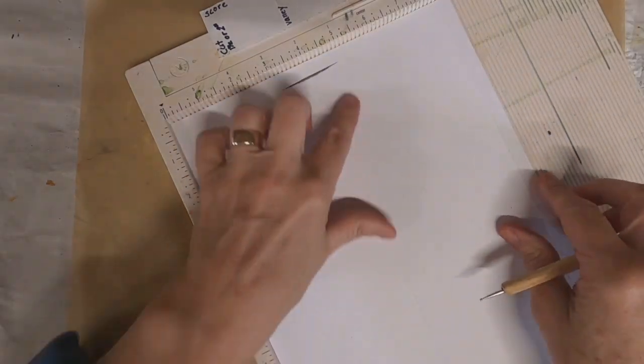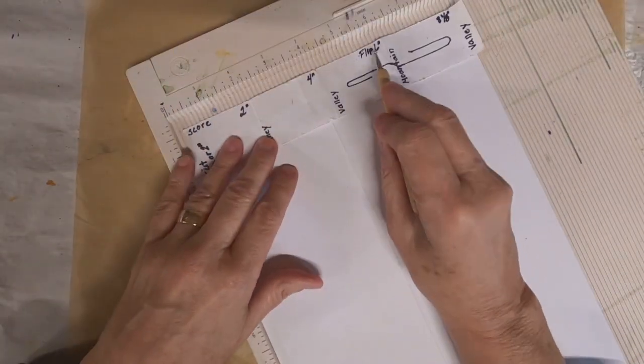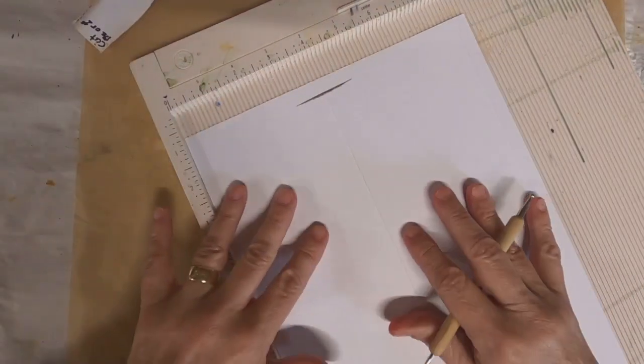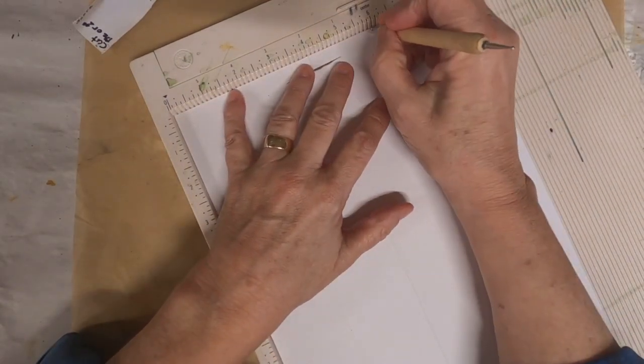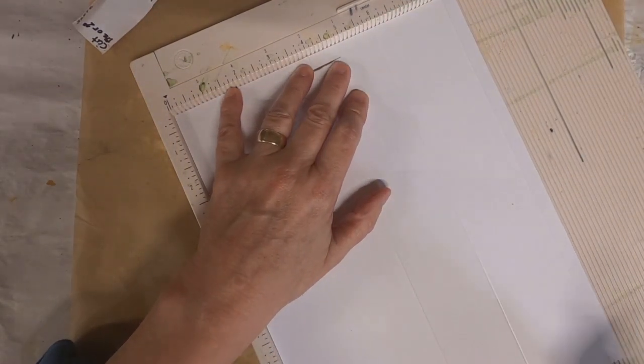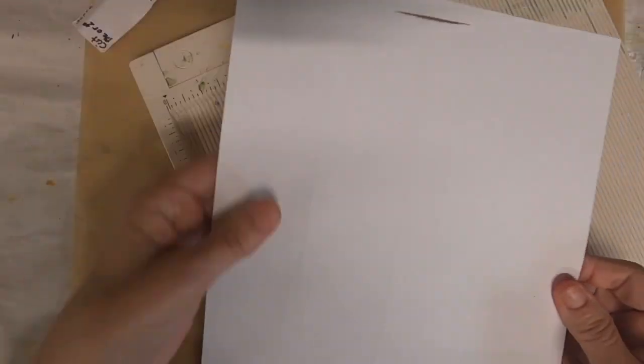Now once I get those three scores in, they're going to create three valley scores, and I'm going to flip this over and score it at six inches and that will be my mountain. That will be my peak. So I have three valleys and one mountain.